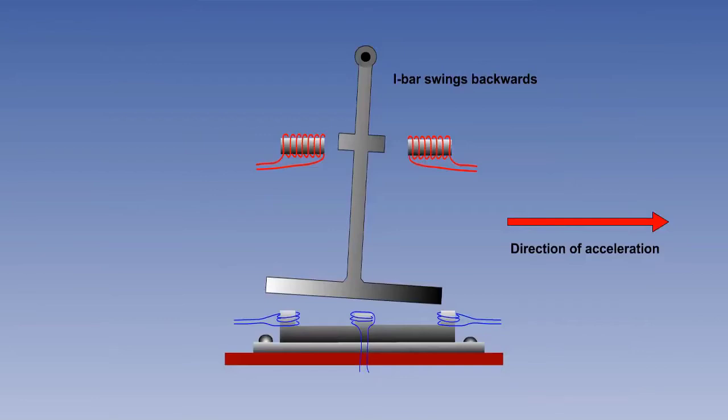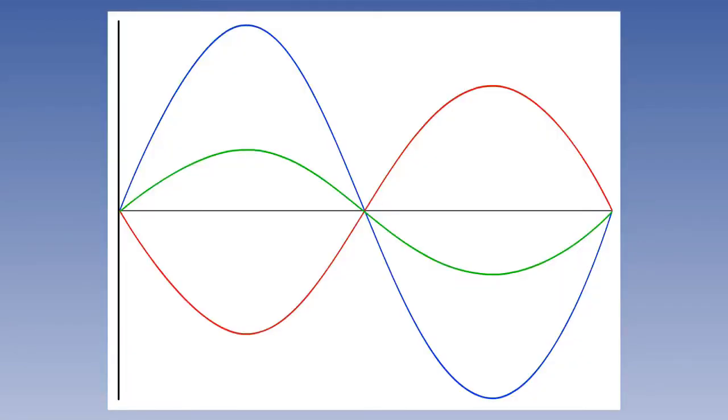The positives and negatives cancel each other out, and we get a resultant of zero. However, if the whole accelerometer now experiences an acceleration, in this example to the right, the pendulum will swing to the left. Now the gaps at each leg of the E bar are not the same. Therefore the induction at each end will be different. This will affect the amplitude but not the polarity or phase. The positives and negatives will no longer cancel out, and there will be a resultant, which will be a new sine wave.